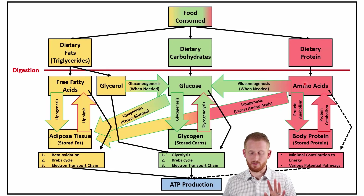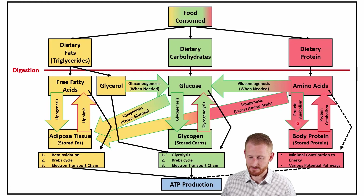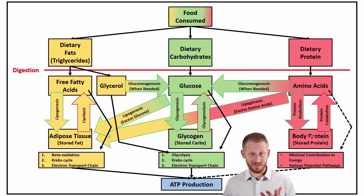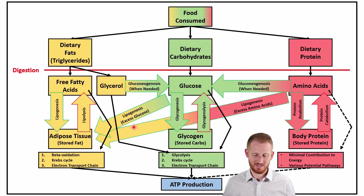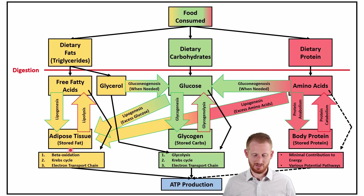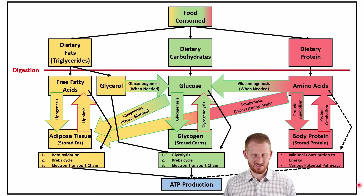Ideally, what we want to do is store the protein, so we go through protein anabolism to store it as skeletal muscle or organ tissue. But that can be broken back down through protein catabolism into amino acids and used through various pathways to make ATP. If you over-consume amino acids or protein, we're going to push the amino acids through lipogenesis, producing adipose tissue. If you over-consume any of these — fats, carbohydrates, or proteins — you're going to make fat.